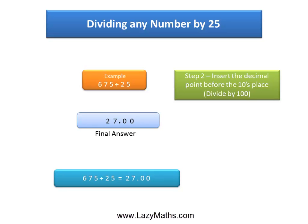So 675 divided by 25 is nothing but 27, and that's it. Thank you.